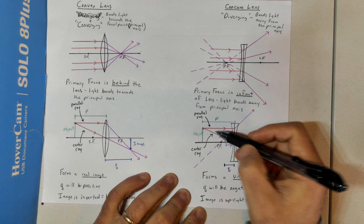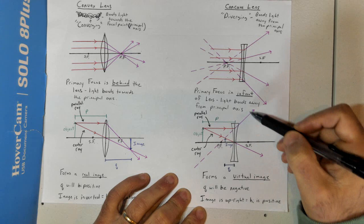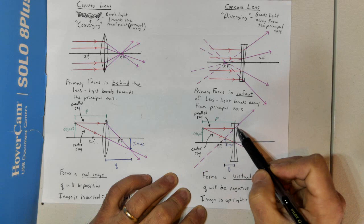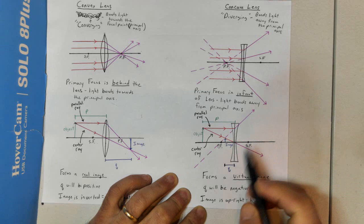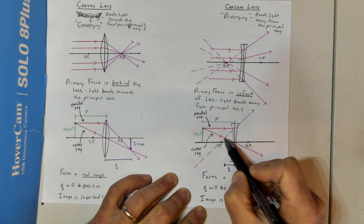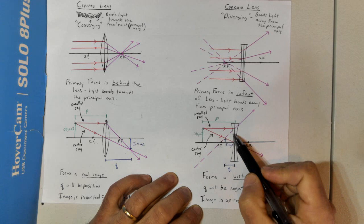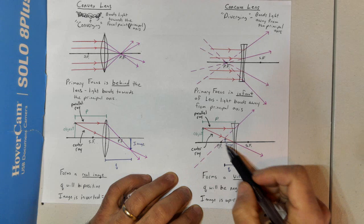We then draw our center ray, which goes right through the center of the lens and continues straight. These two are diverging, so we know they don't intersect. We trace this line back as a virtual line. Tracing them back, we see these two lines intersect, and this is where our image is formed. We still call it a virtual image because there's a virtual ray — not actual light — being used to create it.